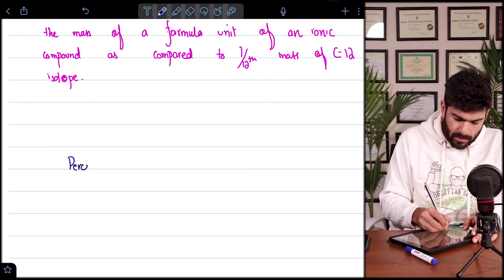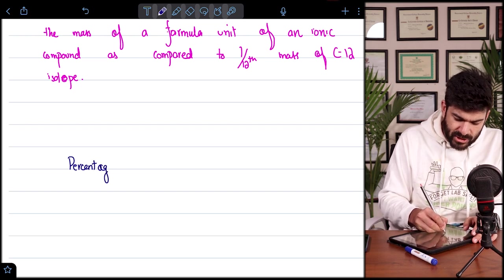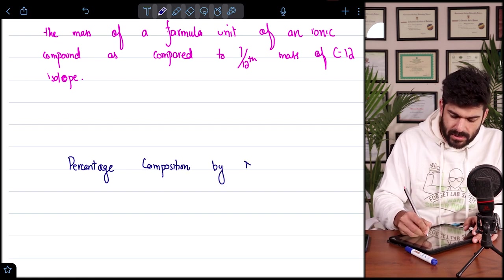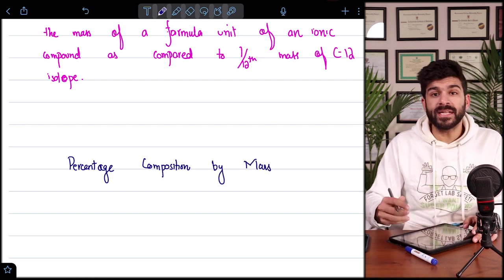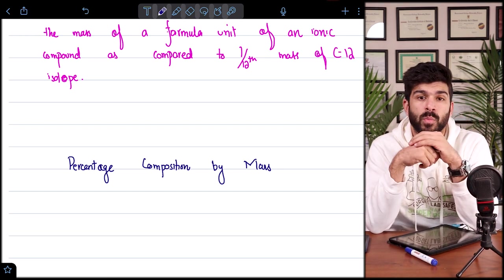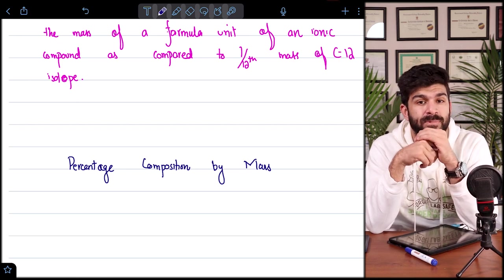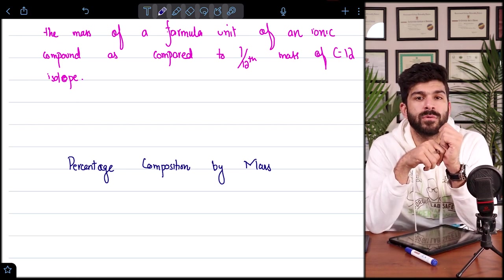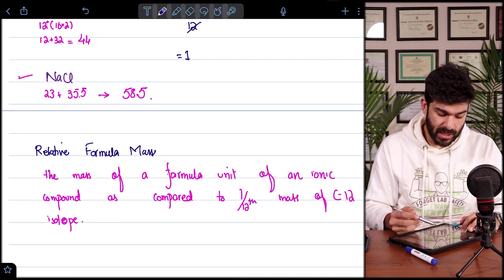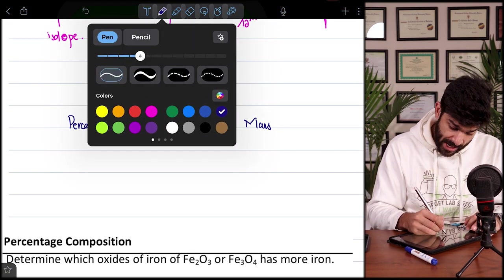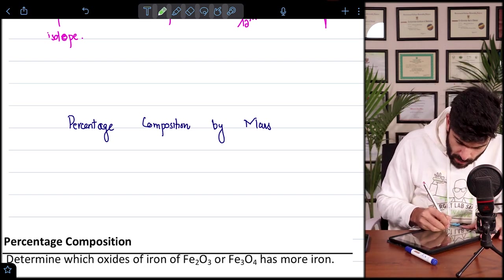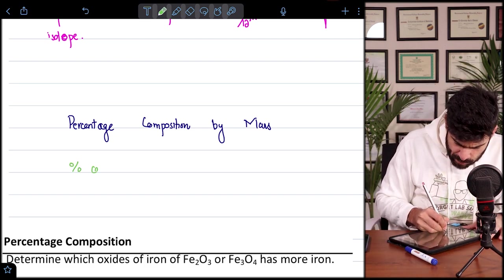We talk about percentage composition by mass. Now, we can calculate that how one particular compound contains a specific element, what percentage of that element is there present in that specific compound. Now, there is a particular formula for that. And for that formula, we will be using the MR and the AR values. And we will be solving two questions for that, so that you know how easy it is.